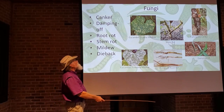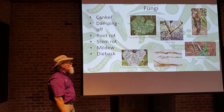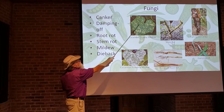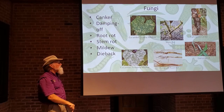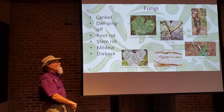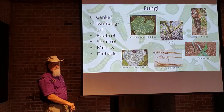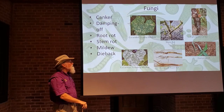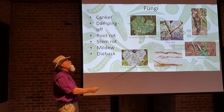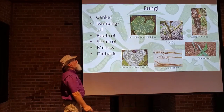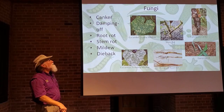And then there are the mildews: cucumber downy mildew and cucumber powdery mildew are devastating diseases on cucurbits. They will completely wipe out all the leaves on the plant, and when a plant has no leaves it can no longer photosynthesize and the plant will die. These are two different mildew diseases — downy mildew and powdery mildew.